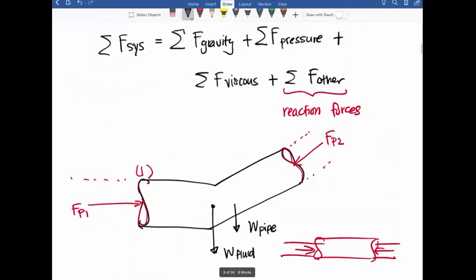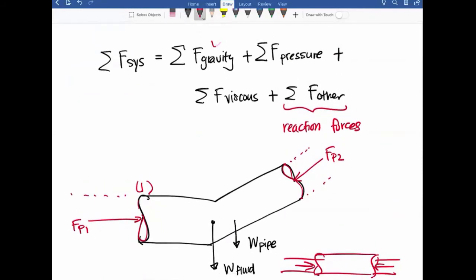So we go back to our checklist. We have gravity, we have pressure. Now we're talking about viscous forces. If our fluid is moving in this direction, which direction is our viscous moving? The opposite. It's going to be in this direction. So this would be F friction. That would be our viscous force.